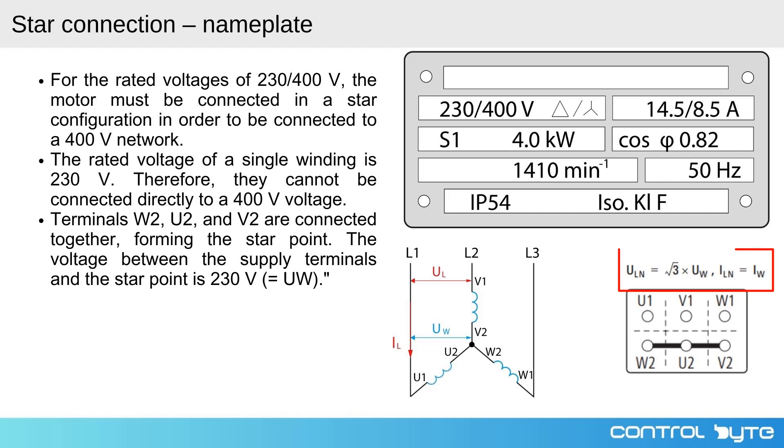The relationship between the line voltage and phase voltage is critical in a star connection. The line voltage UL is equal to the square root of 3 times the phase voltage Uw. Similarly, the line current IL equals the phase current Iw. This ensures that each winding receives the correct voltage, preventing overloading and ensuring efficient operation.